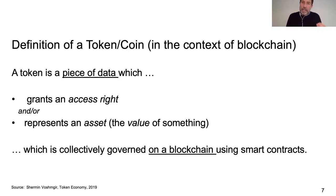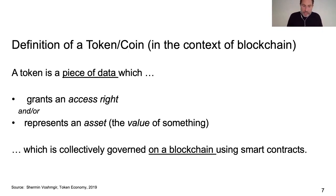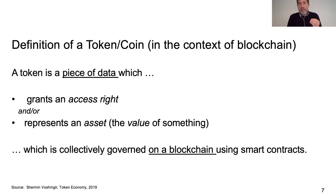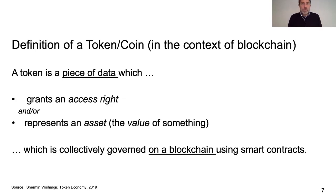A token can also have a second function: the representation of an asset. A token can represent the right to some underlying value in a digital or physical world. The best example is Bitcoin, which represents value in a digital world. But a token can also represent company shares, real estate, or even a piece of art — that would be the use case of so-called security tokens.